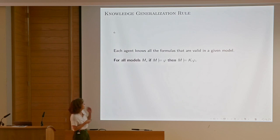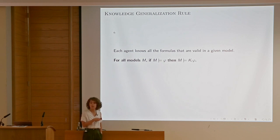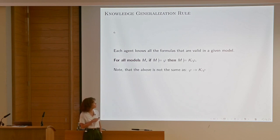The knowledge generalization rule says: for all models, if φ is valid — a tautology or just a valid formula — then the agent knows it. So tautologies will be known. Again, abstractly speaking, great; for human subjects, not so much.